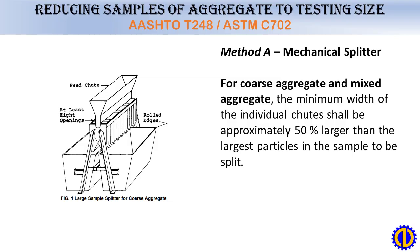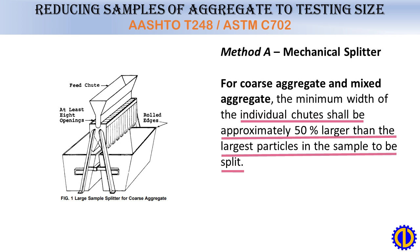Method A: Mechanical Splitter. For coarse aggregate and mixed aggregate, the minimum width of the individual chutes shall be approximately 50% larger than the largest particles in the sample to be split.